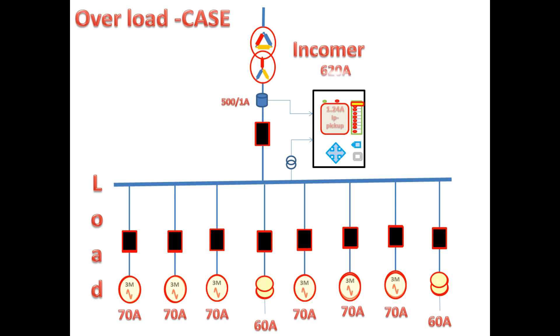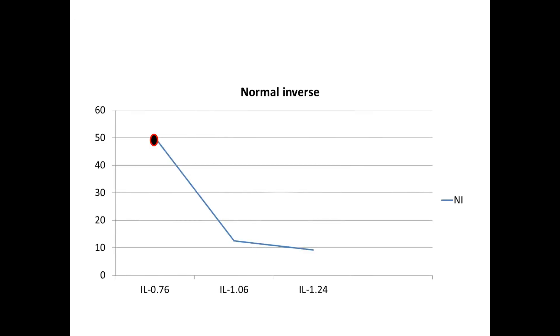In case 3, here also all outgoing feeders are having overload but the actual current is quite higher than the previous case. We have 1.24 Amps in the secondary. When we substitute in the formula we got trip time 9.26 seconds. It is clear that when the fault current increases, the tripping time is getting reduced in IDMT.